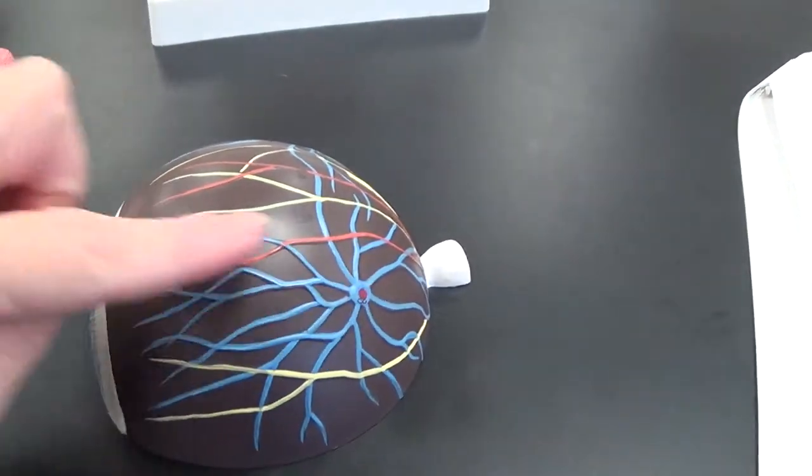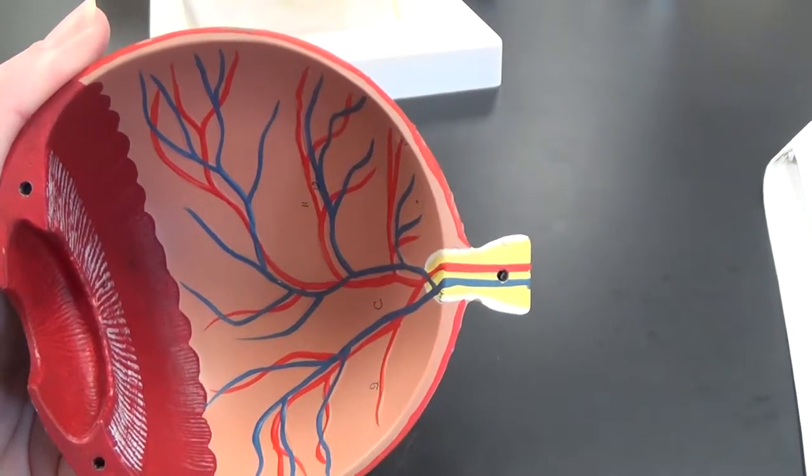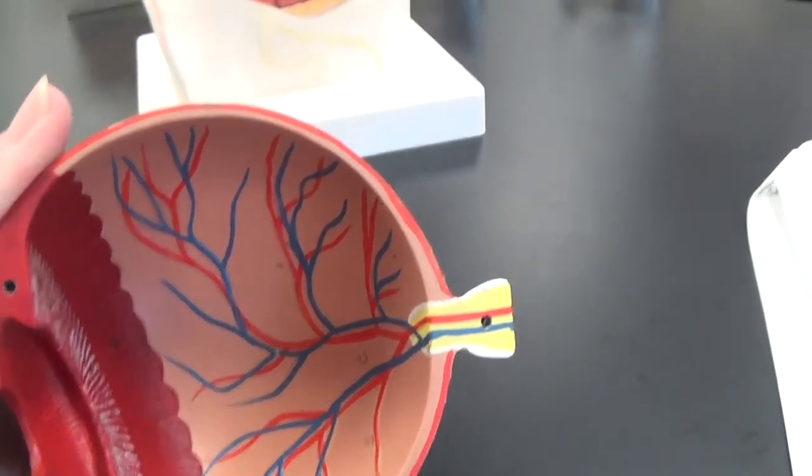This brown layer we are seeing here is the choroid coat. And when we turn that area over, that lighter colored area with blood vessels is the retina.